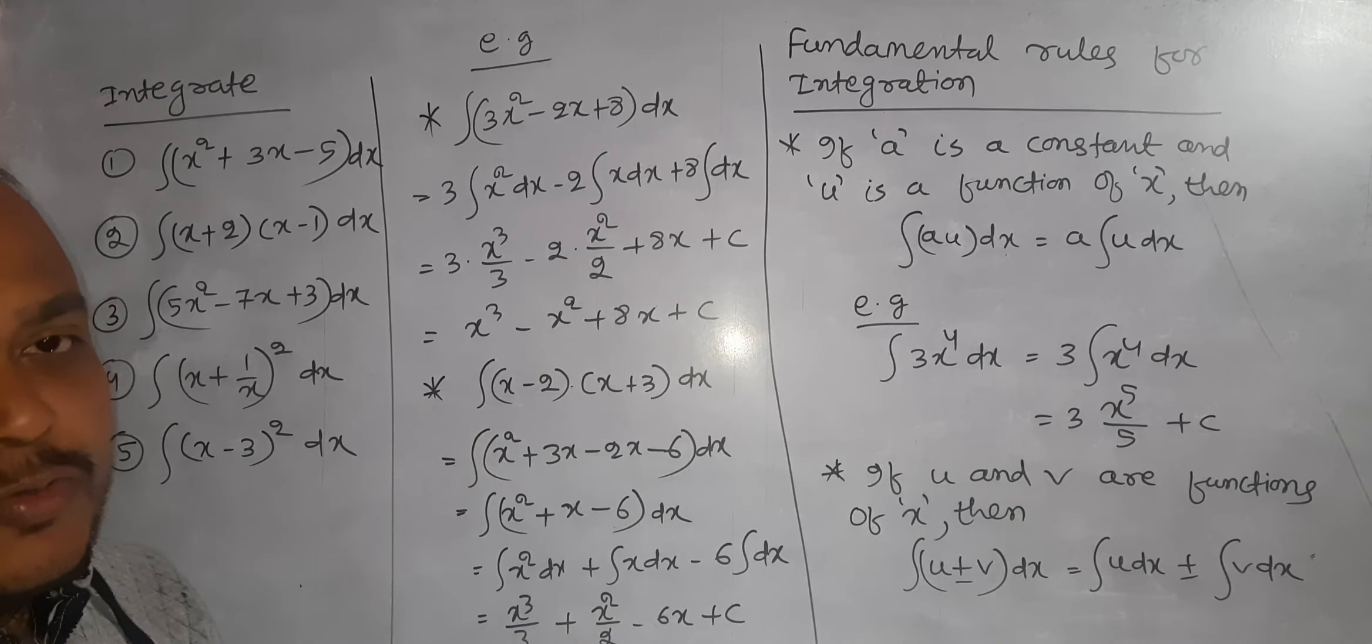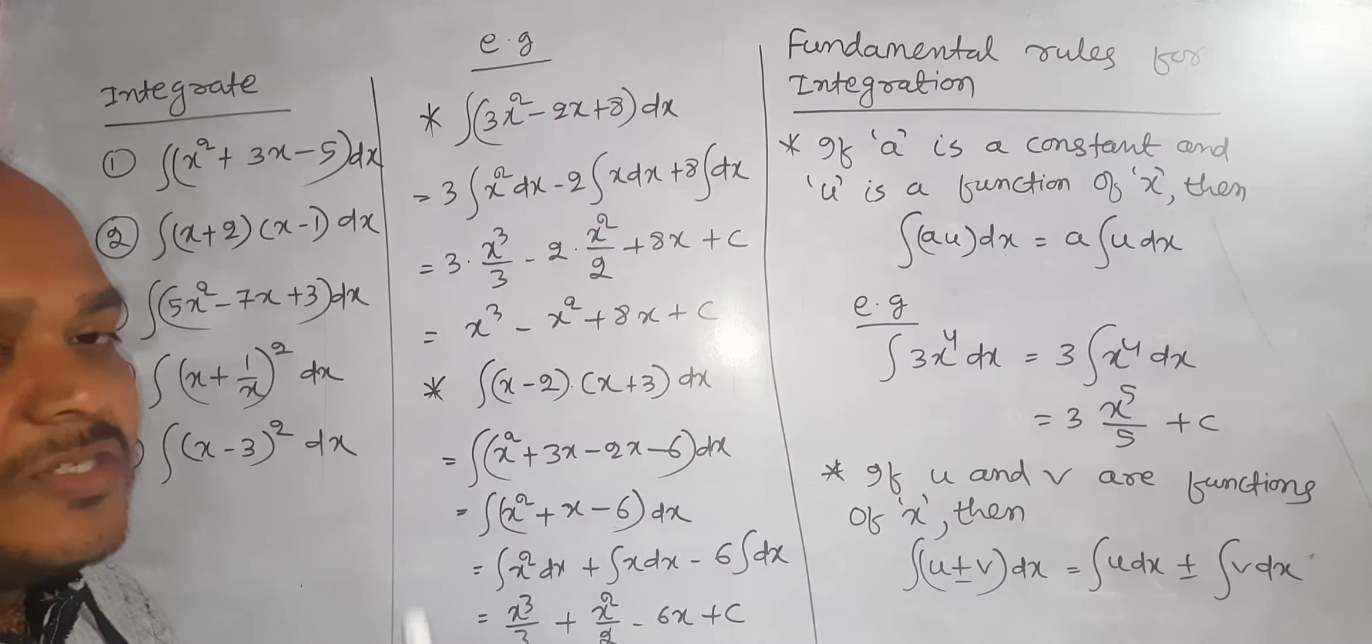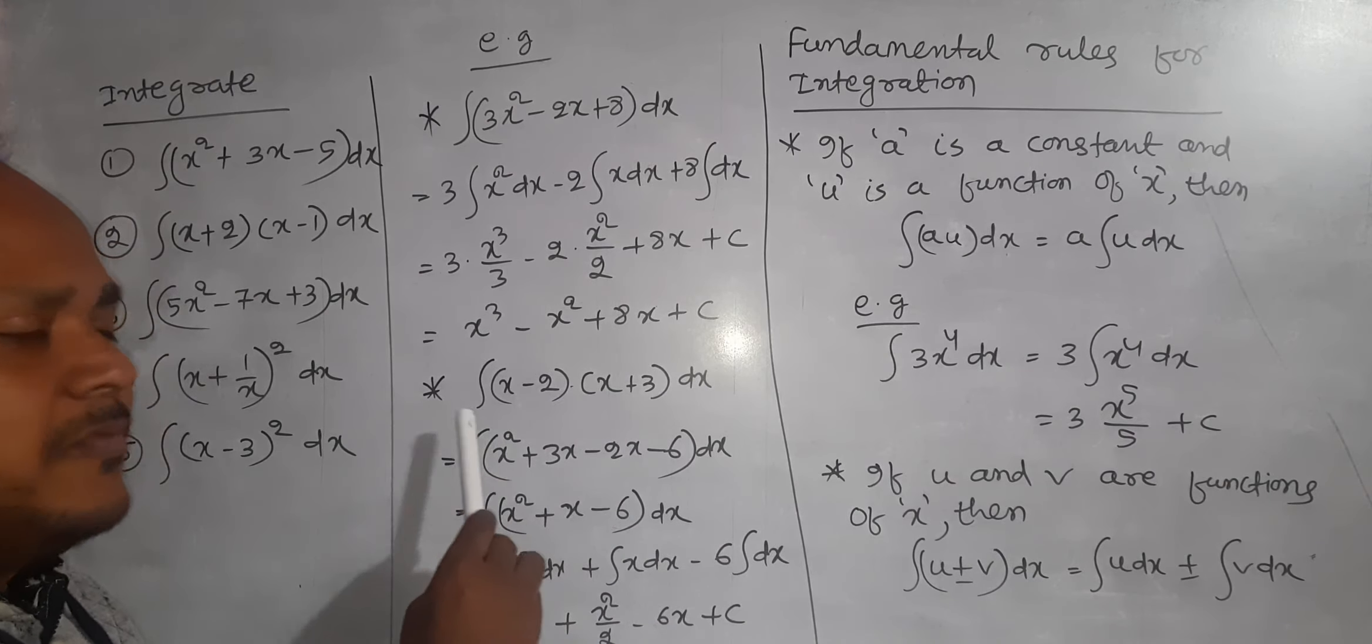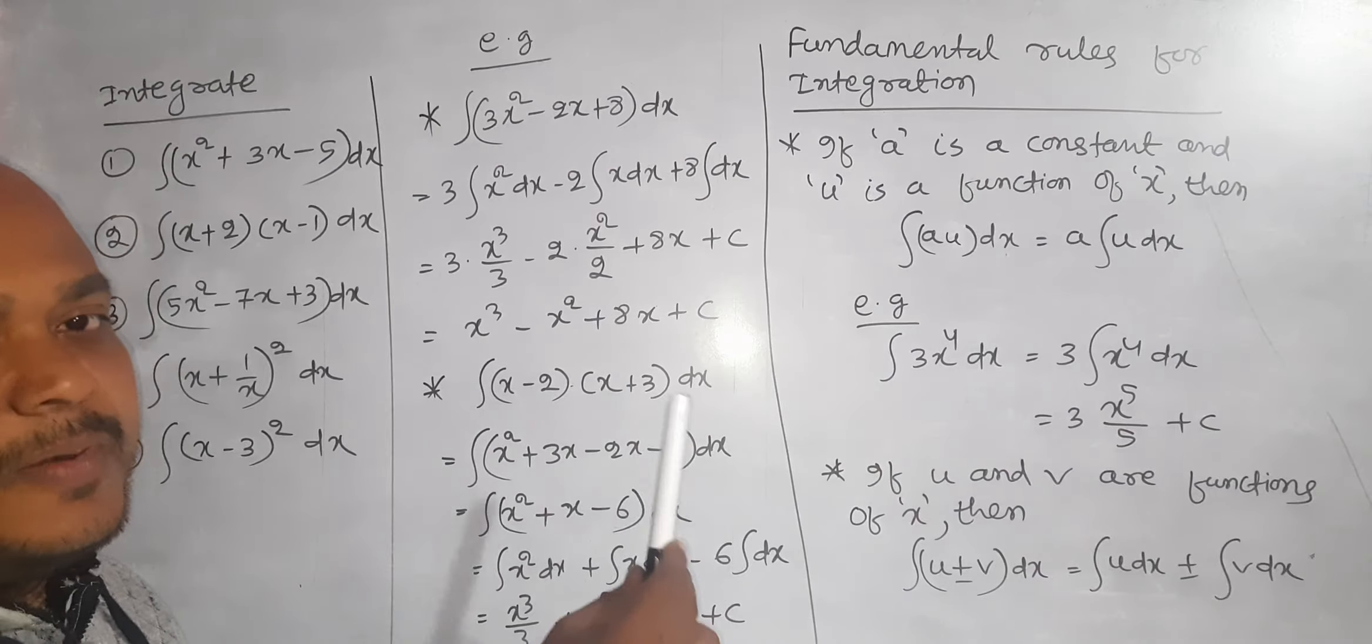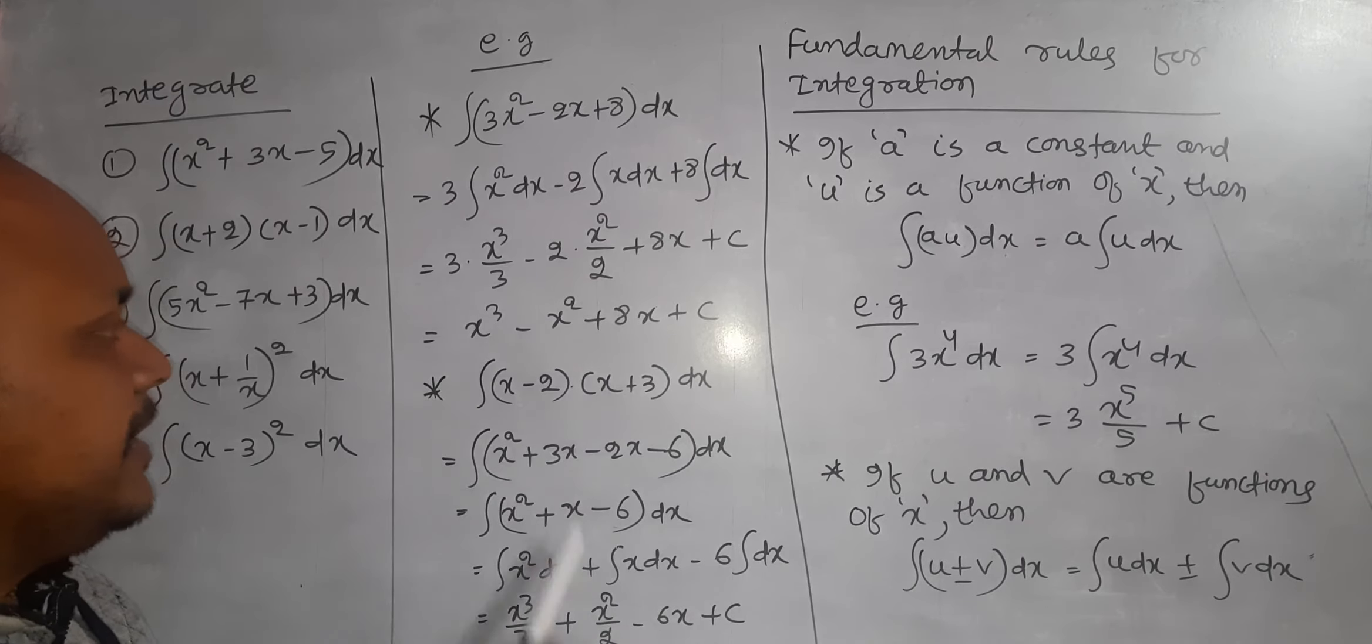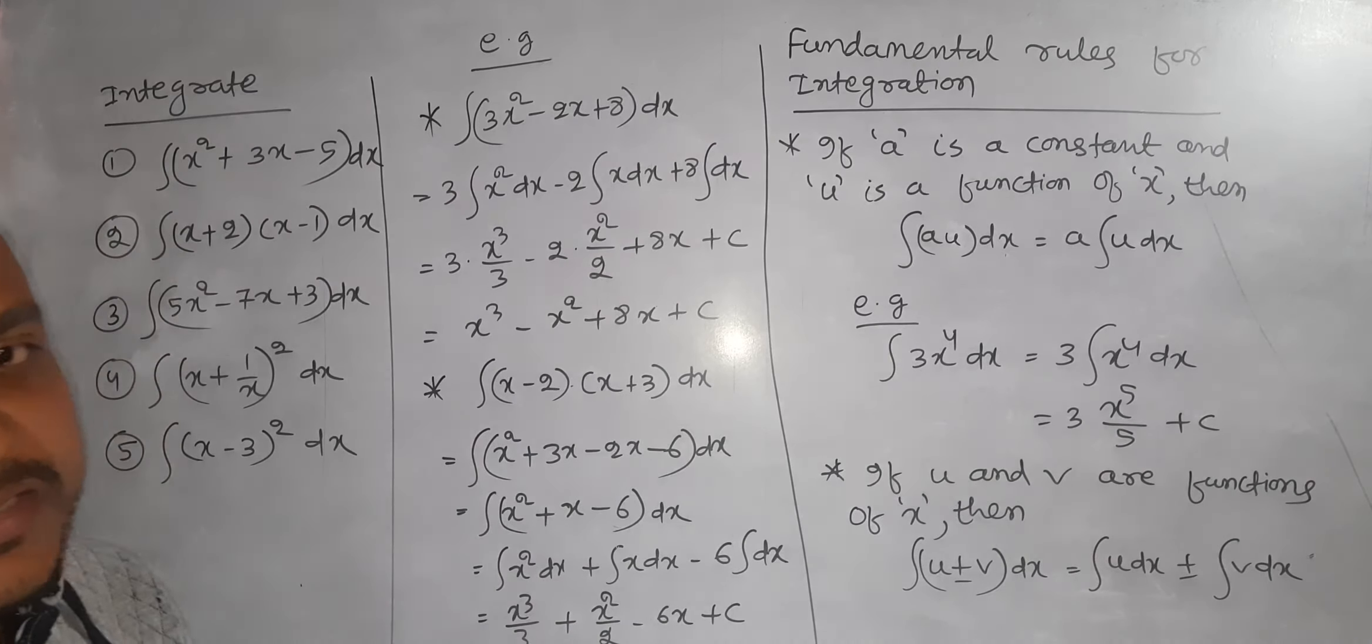So, this is the solution. Another example, let us discuss if there is x minus 2 times x plus 3. First we have to multiply these things and make a polynomial, like here. Then separate and we can integrate like this.